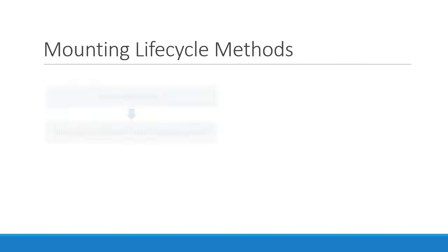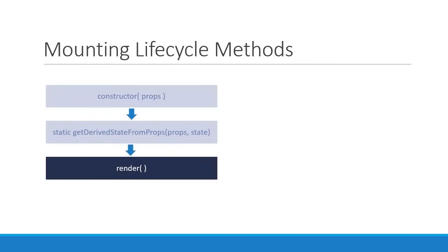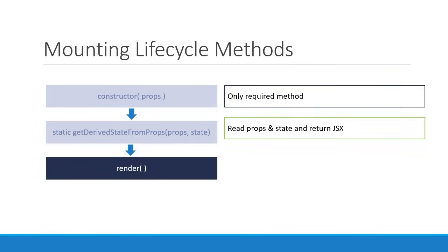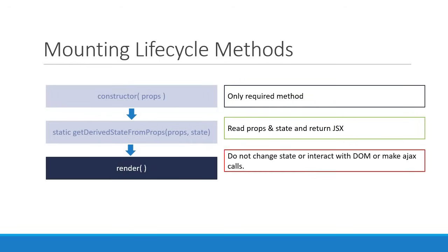The third method is the render method, which by now we are quite familiar with. The render method is the only required method in a class component. In the render method we simply read this.props and this.state and return the JSX which describes the UI. The render function is a pure function — for the given props and state it should always render the same UI. What you should not do here is change the state of the component, interact with the DOM, or make any Ajax calls.